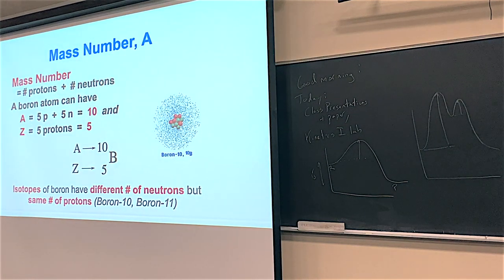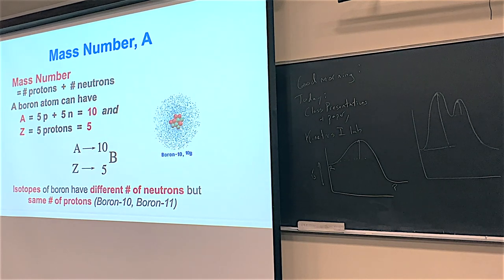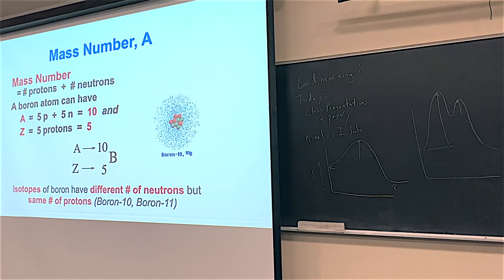All atoms have more than one isotope. An isotope means the Z — the number of protons — is the same, but the number of neutrons differs. Scientists use mass number A, which equals protons plus neutrons. For example, boron with 5 protons and 5 neutrons is boron-10; with 5 protons and 6 neutrons it's boron-11. The periodic table shows 10.811 — a statistical average. Copper has two primary isotopes: copper-63 and copper-65. The periodic table shows 63.546, which is closer to 63, so copper-63 is more abundant.